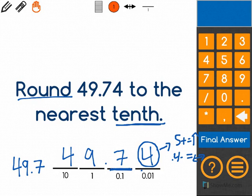Remember, we are rounding to the nearest tenth, so we do not write any digits after the tenths place. The correct answer is 49.7.